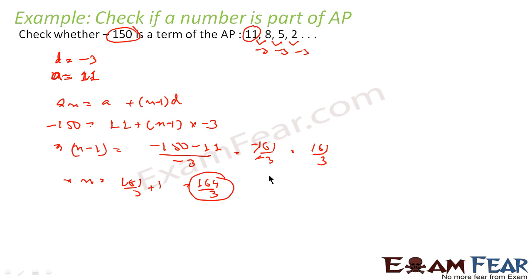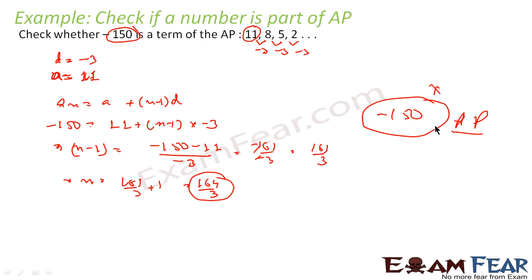Since n came out to be a fractional value, minus 150 is not part of this AP. If n had come out to be an integer like 3, 4, 5, 6, 7, 8, or 9, we could have confirmed that minus 150 is part of the AP. The rule is an equals a plus (n minus 1)d where n must be some positive integer. Since n is non-integer here, minus 150 is not part of this AP.